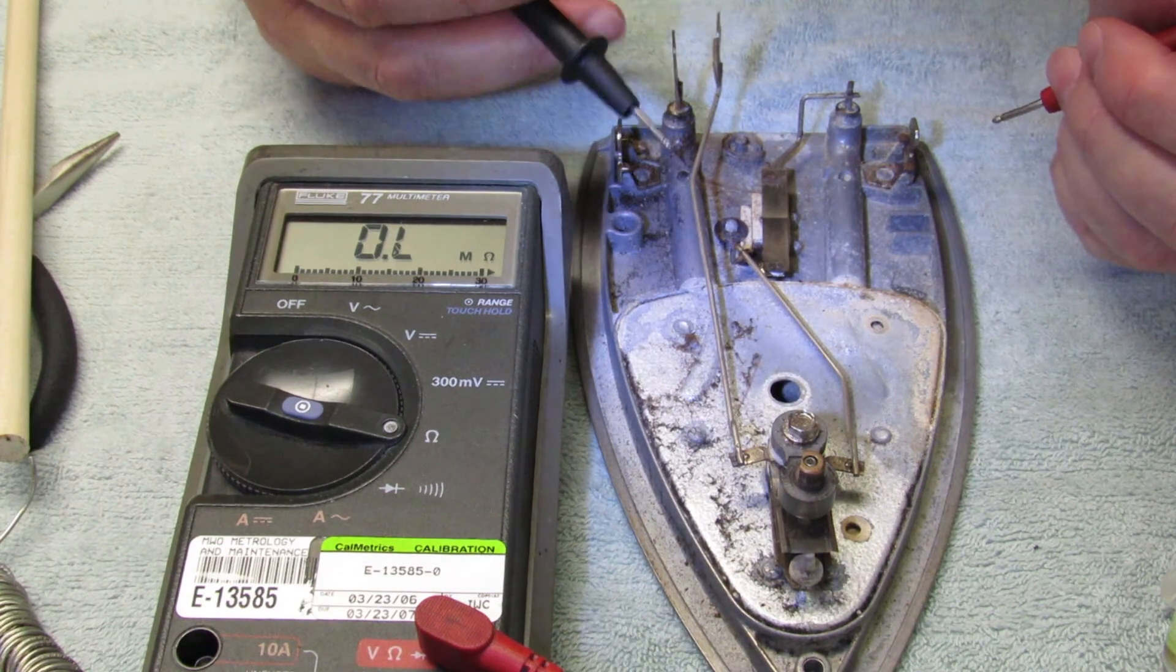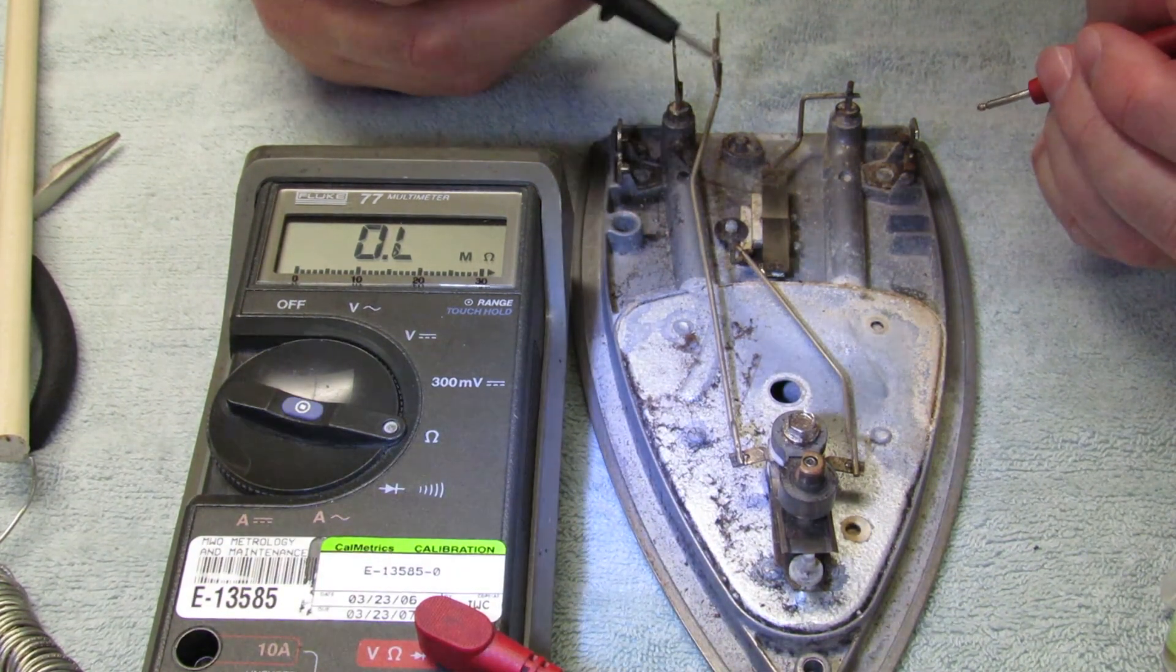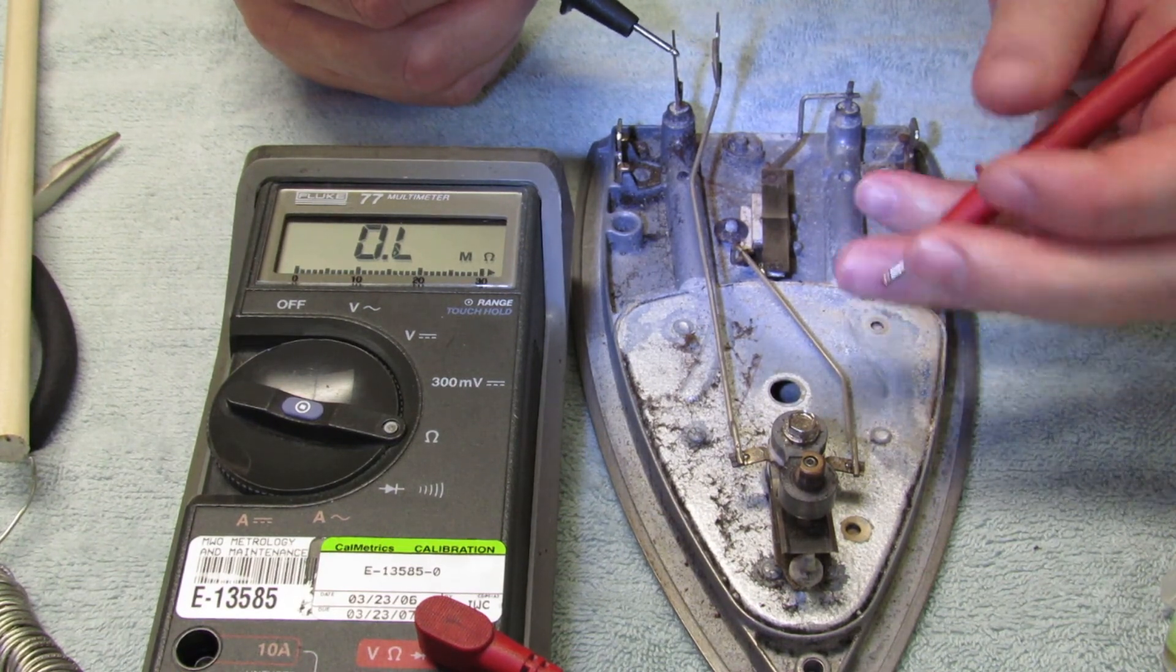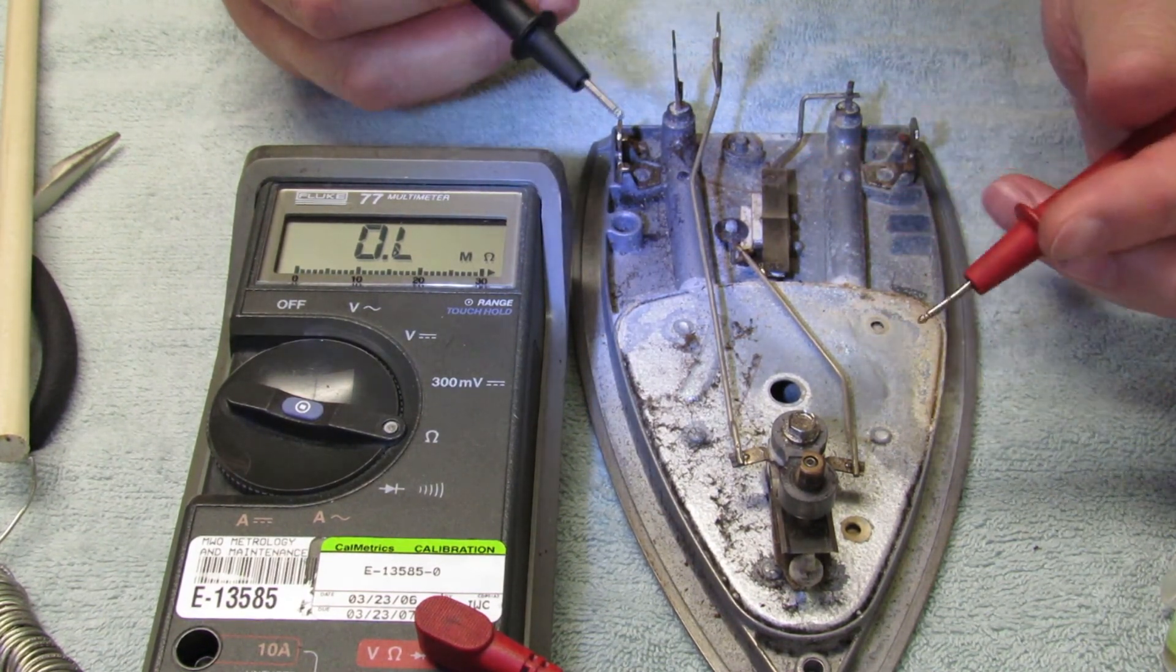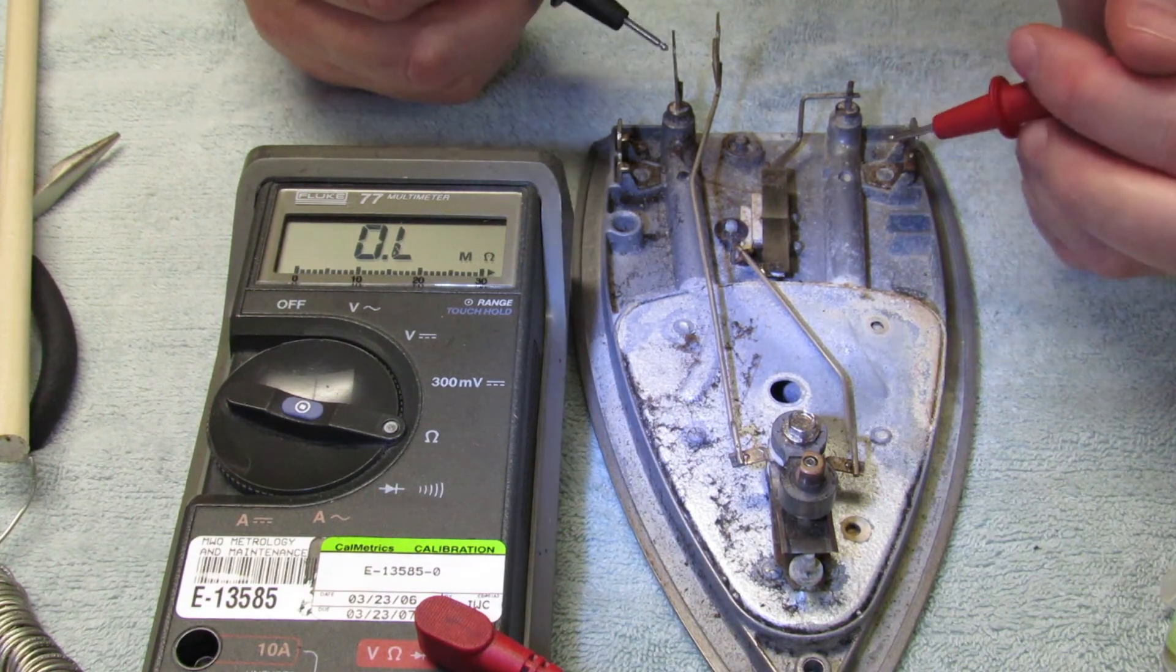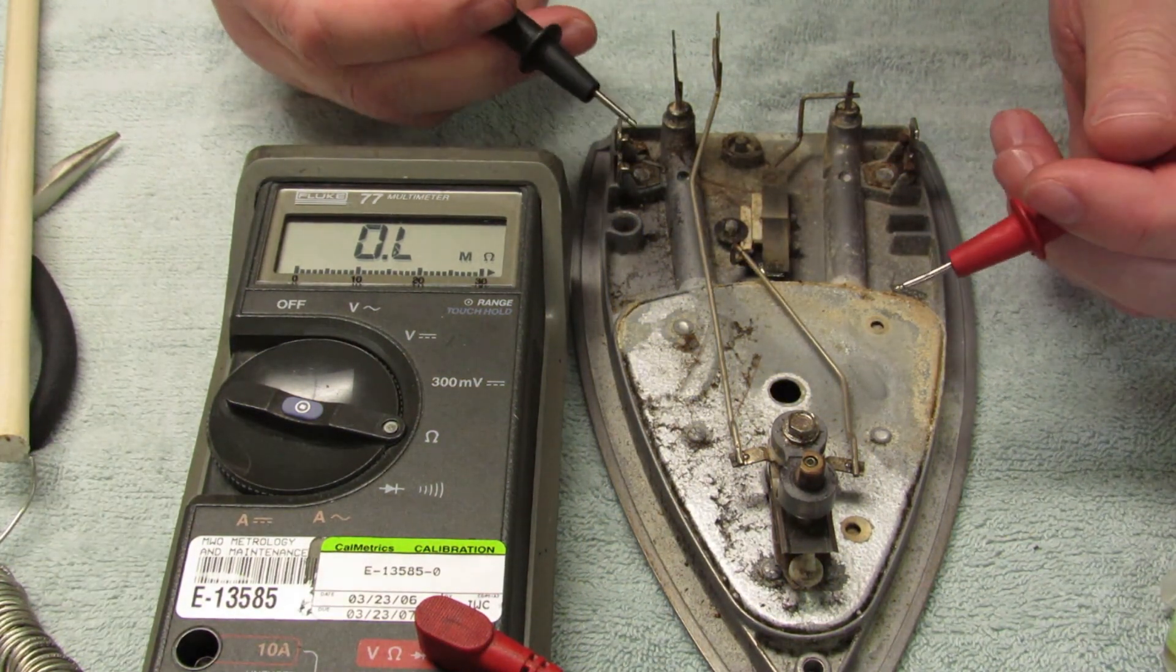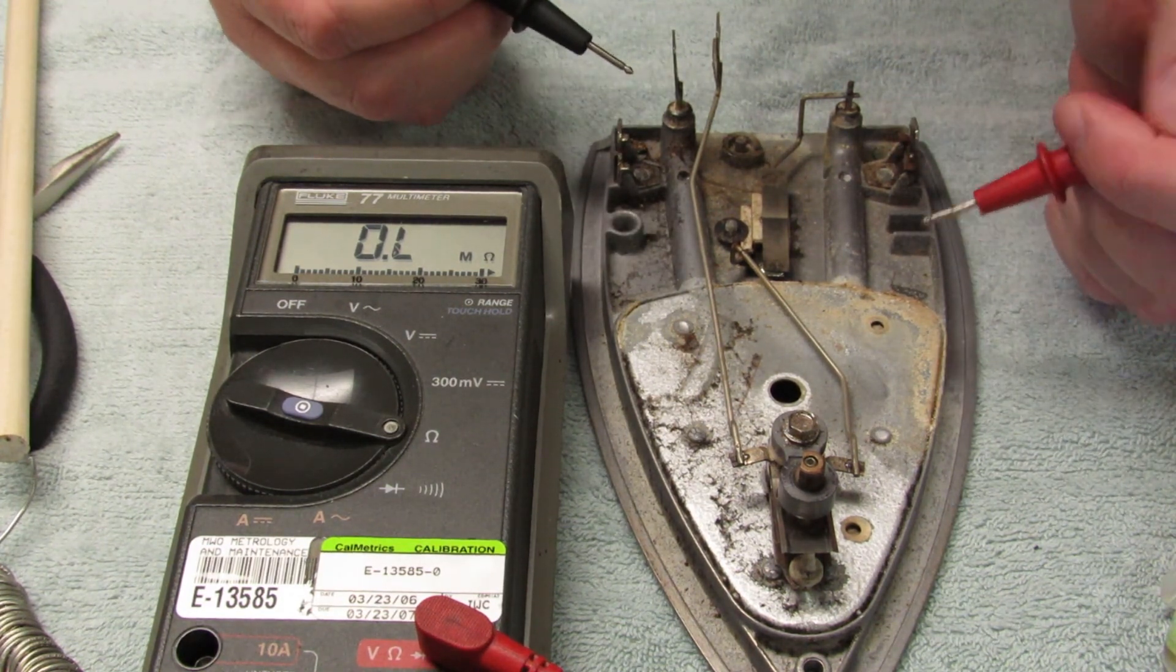So maybe that does a little more than just heat control. It also probably controls the current that heats this element up. Because if the resistance doesn't change then the current must change to get more or less voltage. Or the voltage. So maybe it controls one of those two things at least.